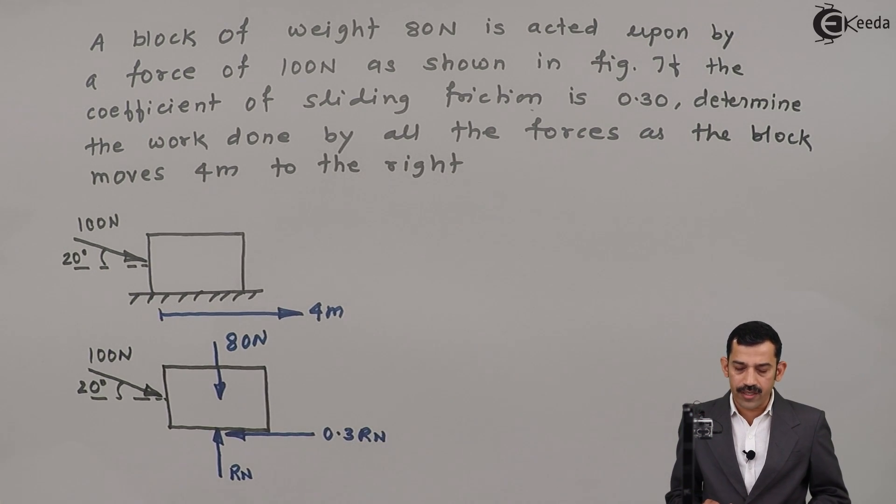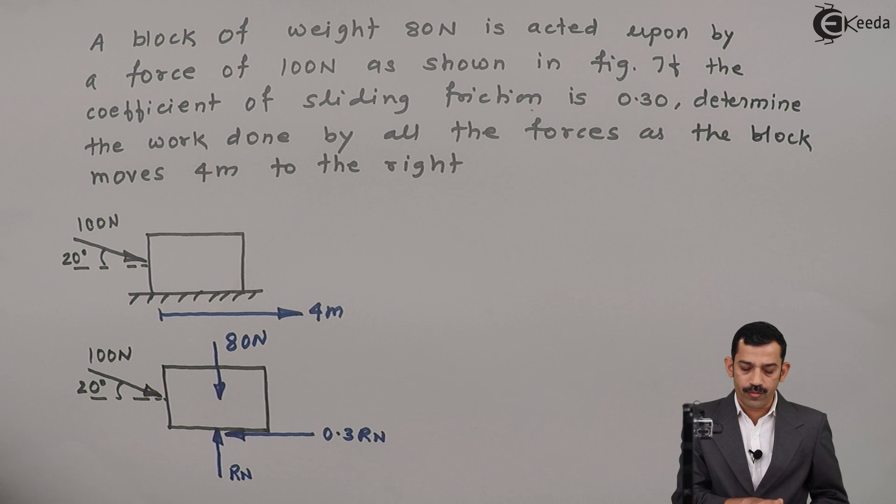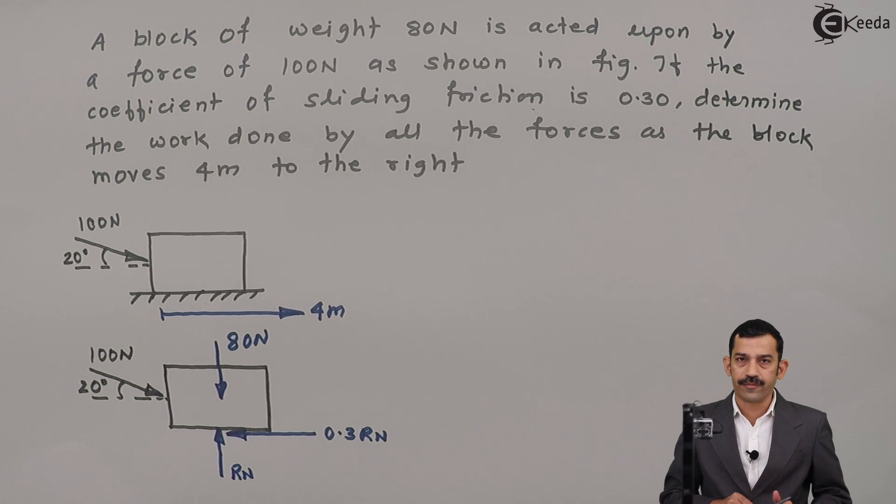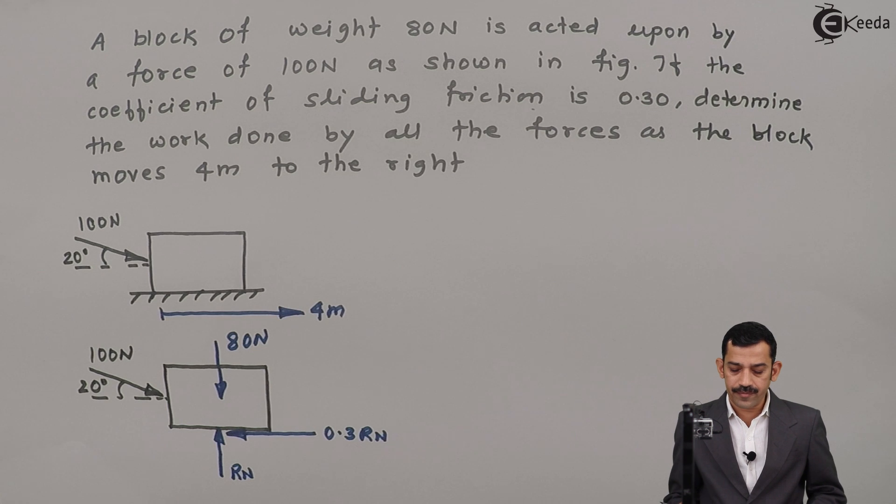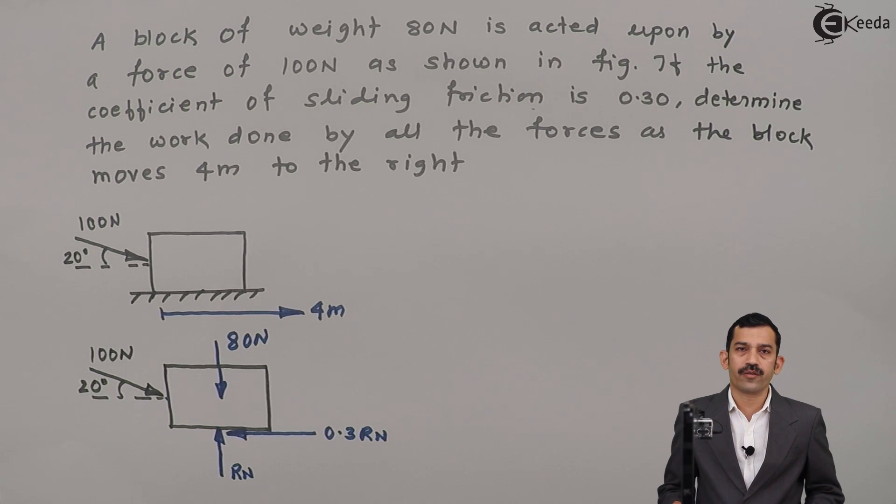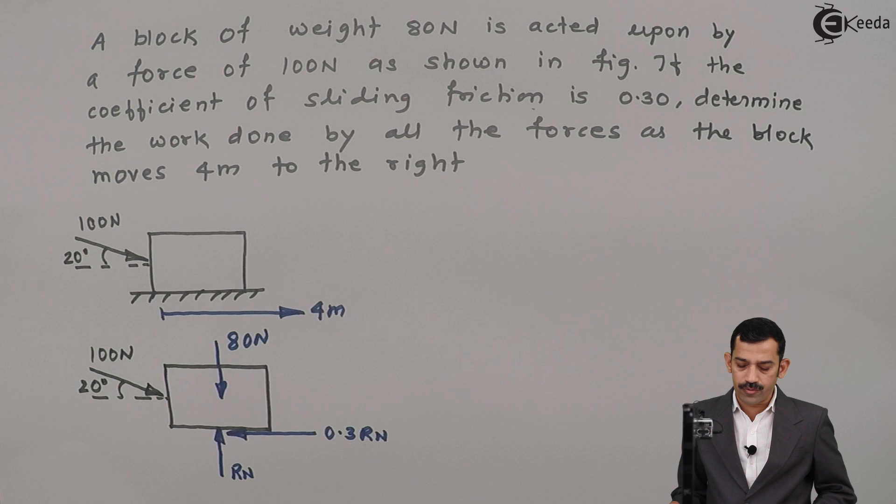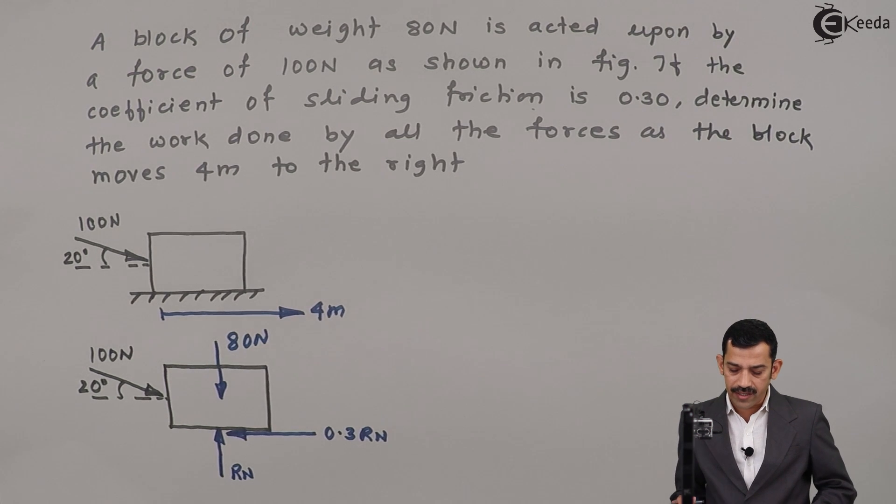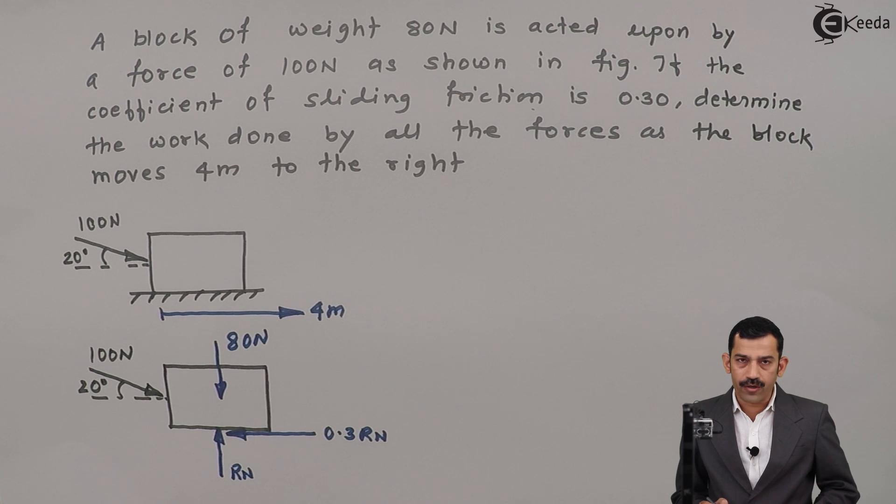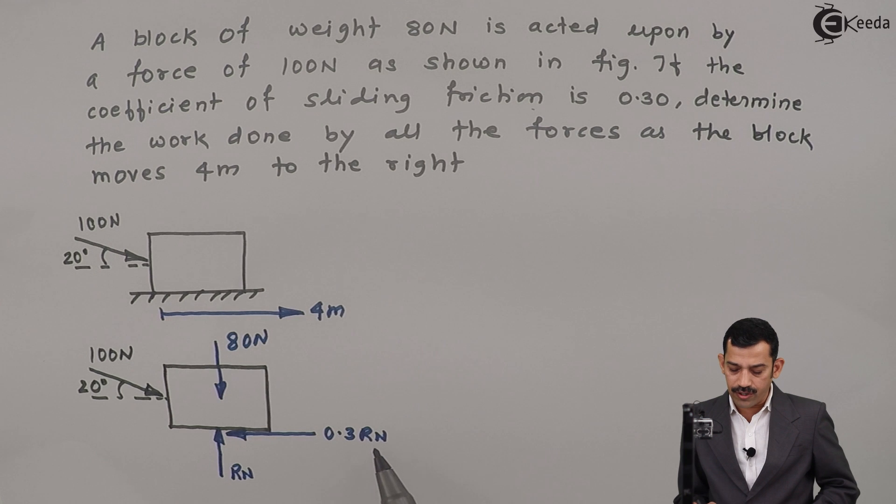Now work is done by which forces, that is important. Motion is in horizontal direction. Therefore, forces which act in horizontal direction will get work done by only these forces. Which forces act in the direction of motion? Component of 100 in horizontal direction, that is 100 cos of 20 degrees. And second force is 0.3 RN. That means you have to find out first RN.